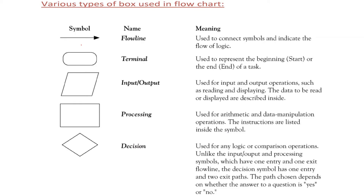There are various types of boxes used in a flowchart. Since this is a flowchart, we have to show the flow of control, the program flow, or the steps — how these steps are taken, how decisions are made, and what steps are taken to handle various situations that arise when solving a certain problem.